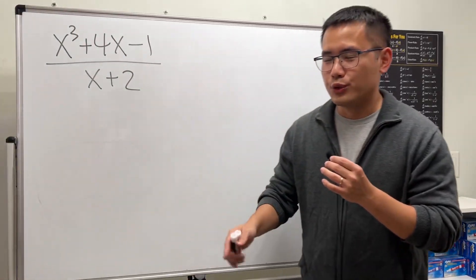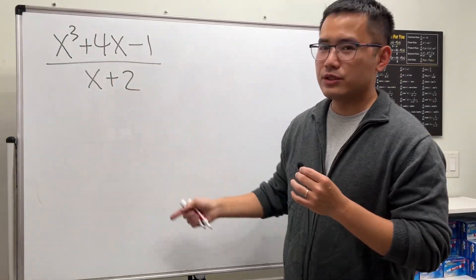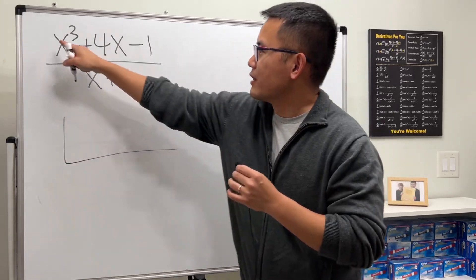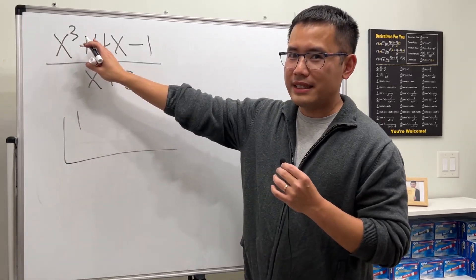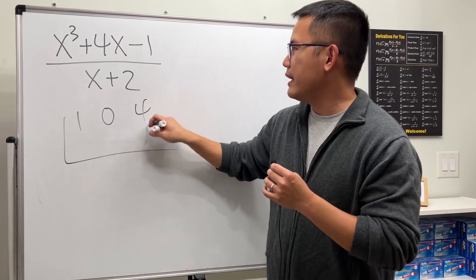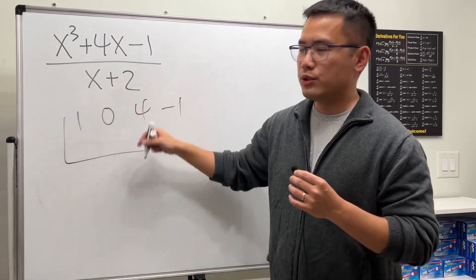Alright, so this is the fastest synthetic division tutorial. Check this out, we have x cubed plus 4x minus 1 divided by x plus 2. So we go ahead and do this. The coefficient right here is 1, but there's no x squared, so it's 0, and then 4, and then minus 1.